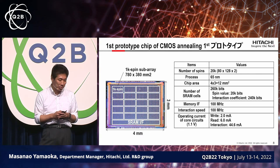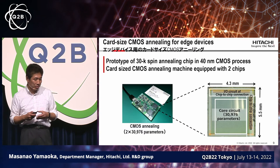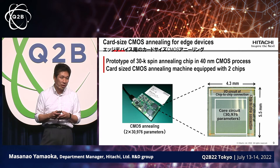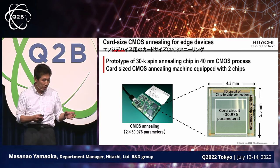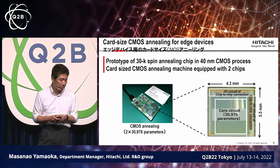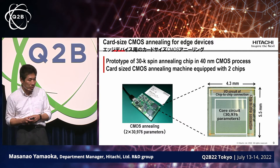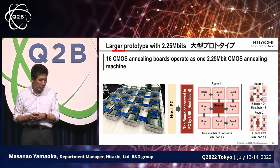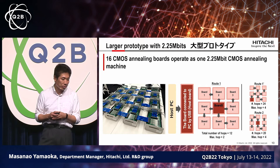Initially we built the first chip using 65 nanometer process — a very mature semiconductor technology — which we announced. We are talking about social innovation, so IoT is important and we need computation to occur at the edge. So we created a business-card-sized CMOS annealing device so that computation can take place at the edge.